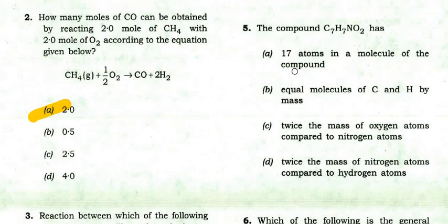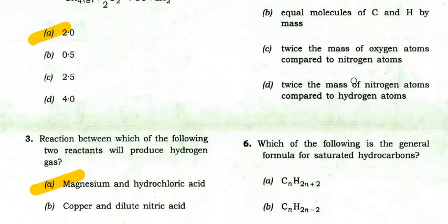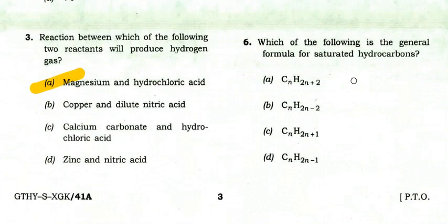The compound C7H7NO2 has 17 atoms in a molecule. Which of the following is the general formula for saturated hydrocarbon? This is a simple question — the answer is CnH2n+2, which is the alkane formula.